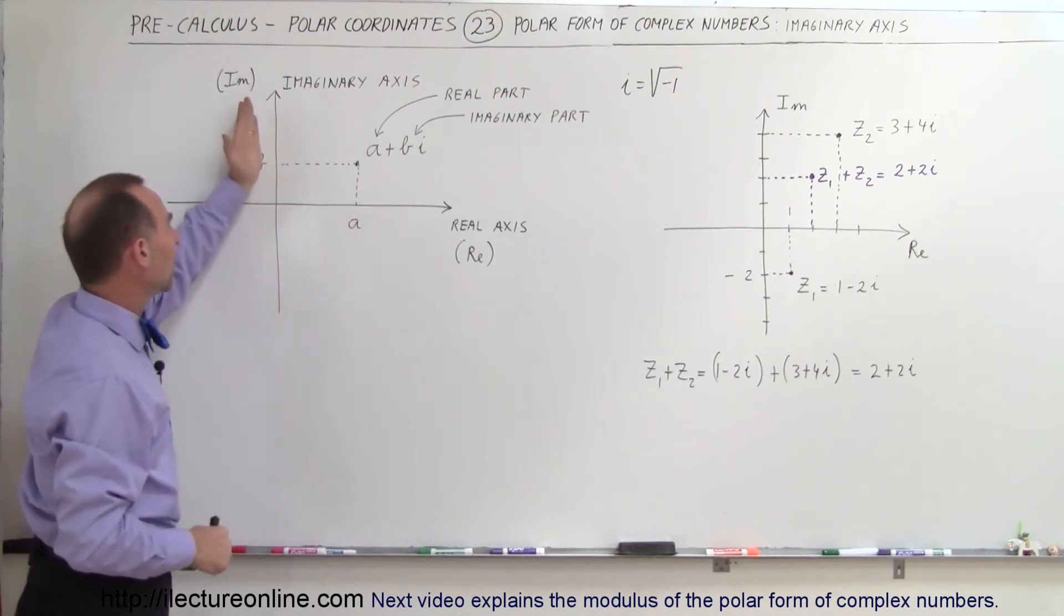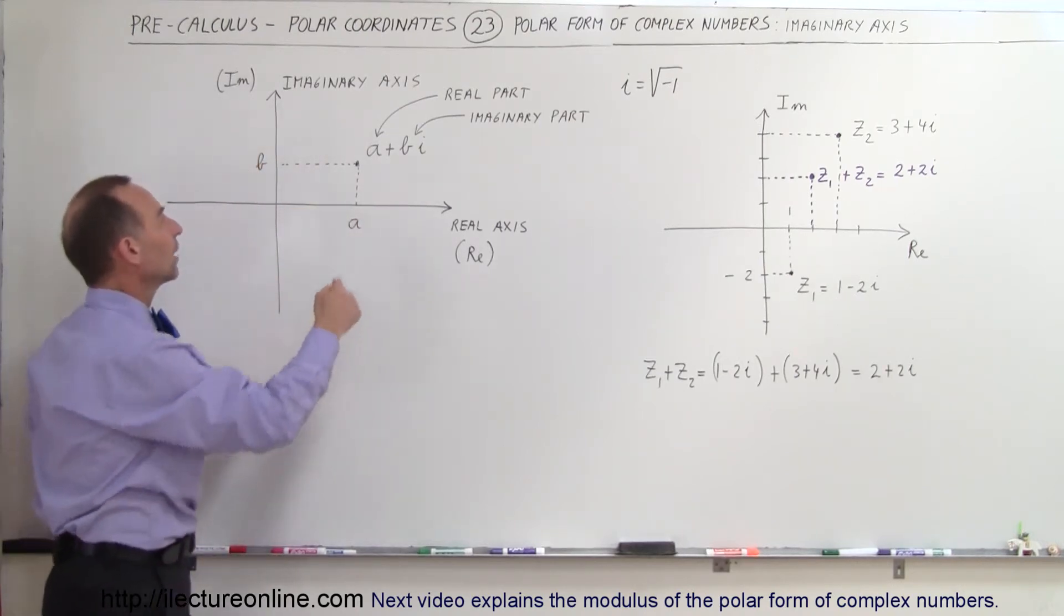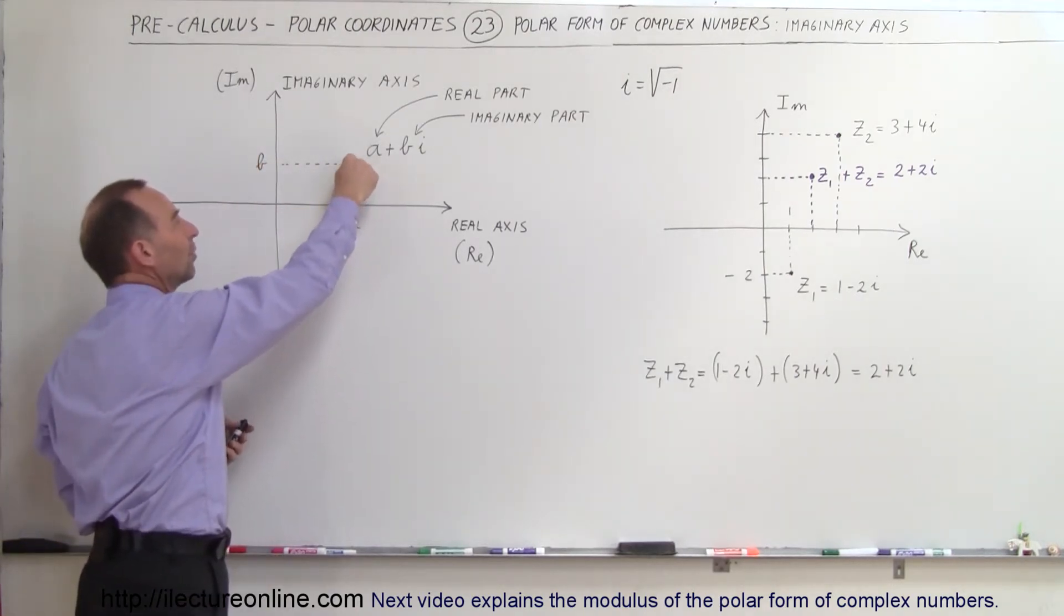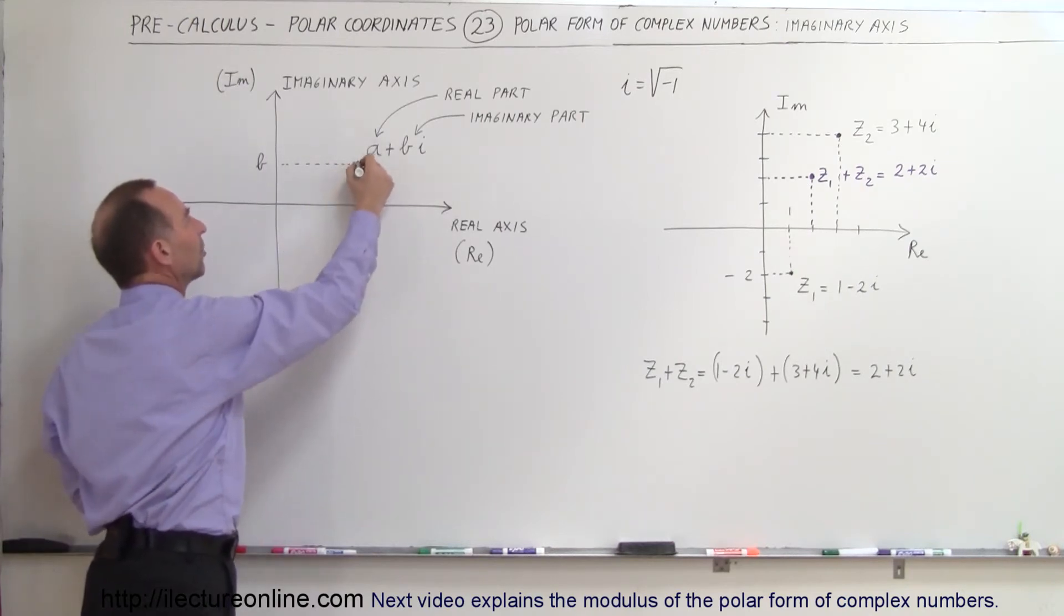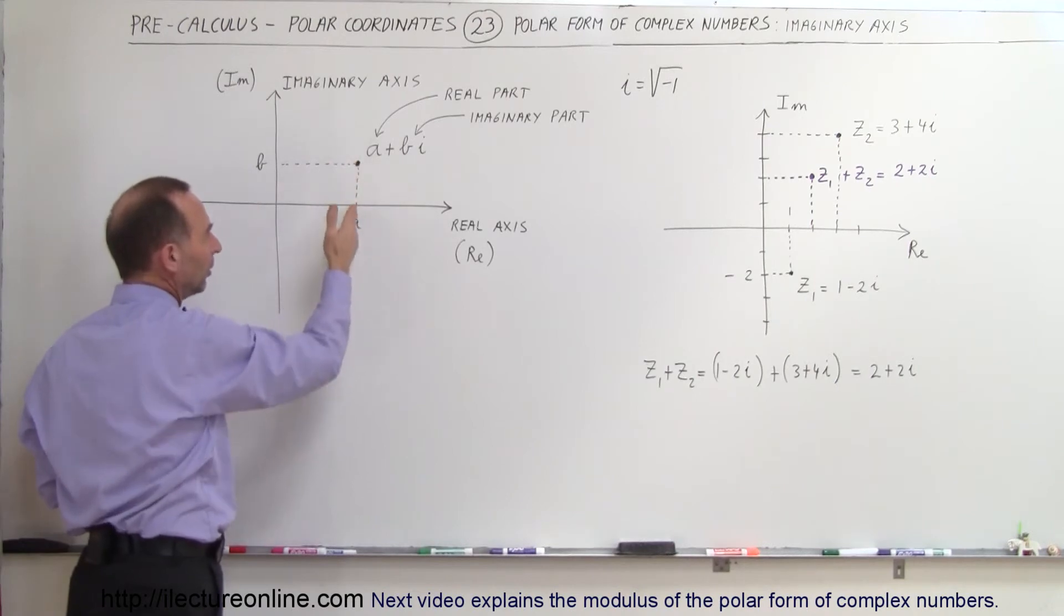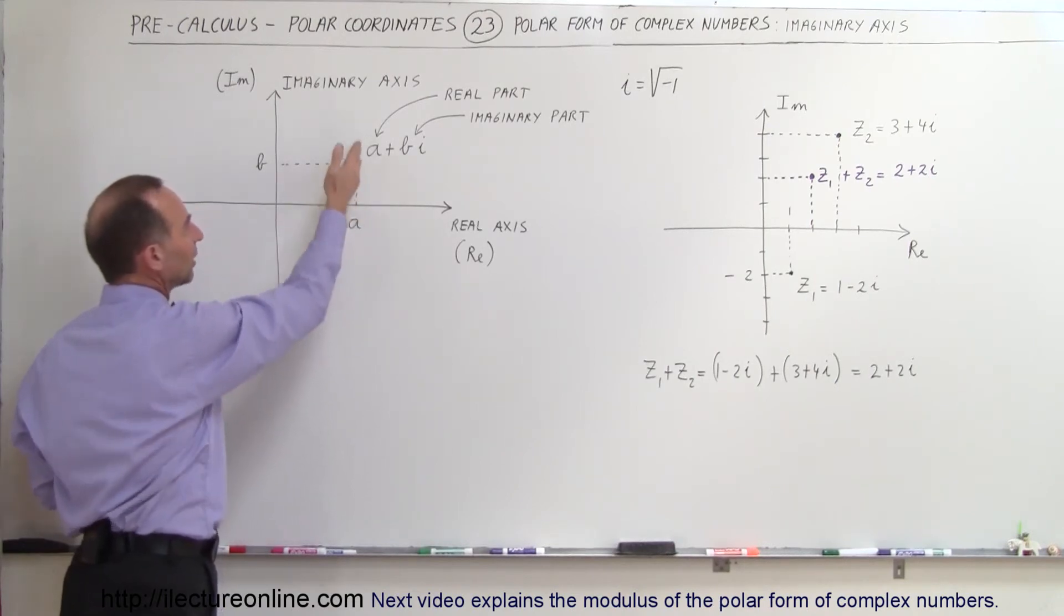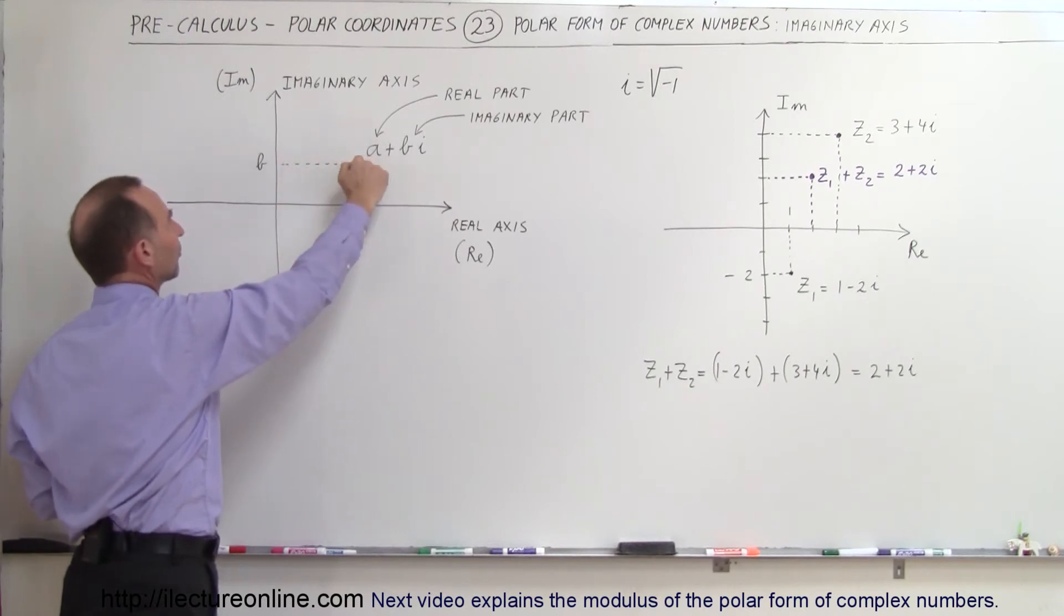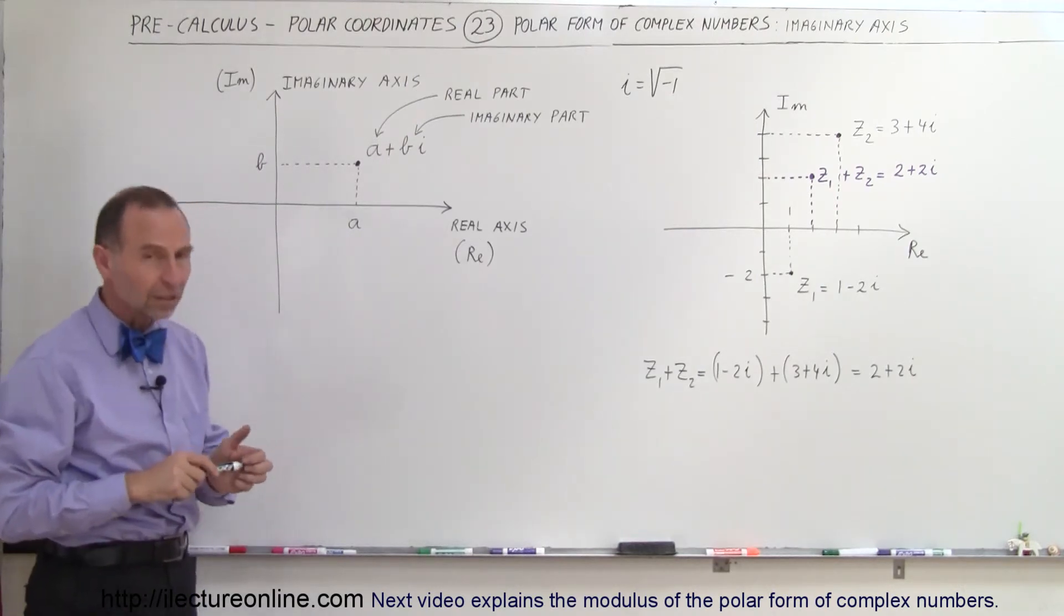So we have the real axis and the imaginary axis. If there's a number represented right here by this dot, that number would correspond to a real part, which is A in this case, that falls directly down below on the real axis. If we draw a line from the point over to the vertical axis, that would be the value of the imaginary part.